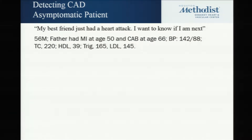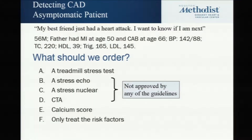So my best friend just had a heart attack. I'm scared. I want to know if I'm next. How often have you heard that in your practices? It comes from a middle-aged fellow whose father had an MI in his 50s, had also CABG. He's a little hypertensive, his lipids are not the best — but he's asymptomatic. He feels happy, plays golf, doesn't have any symptoms. Should we just do a treadmill? Go straight to stress echo or stress nuclear? Do a CTA, calcium score? Or just reassure them and treat the risk factors? B, C, and D are not approved by guidelines — good luck with your insurance company. I'll show you in a minute why.